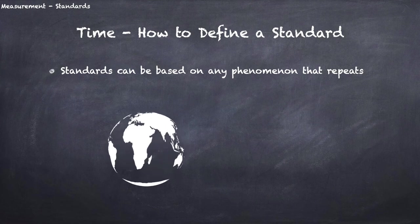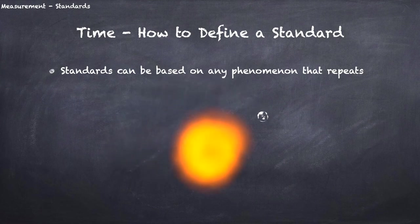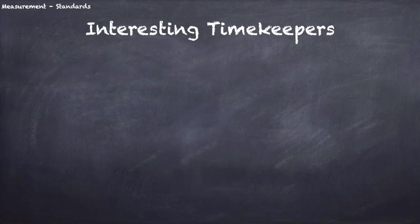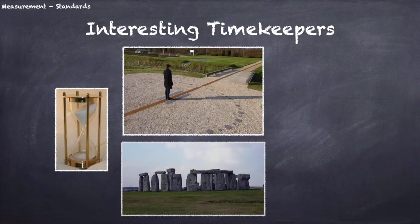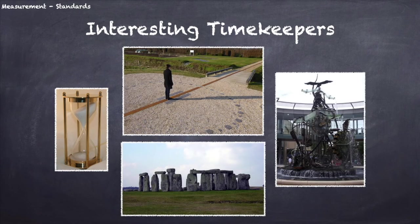The standard of time can be based on any phenomenon that repeats itself regularly. As we know, Earth's rotation about its own axis defines a day and Earth's orbiting the sun defines a year. Interesting timekeeping devices include hourglasses, sundials, Stonehenge, and Hornsby water clock in Sydney.